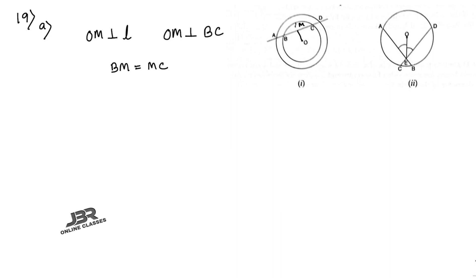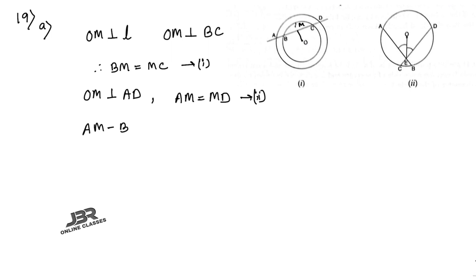Also, OM is perpendicular to AD for the outer circle, so AM equals MD. Subtracting: AM minus BM equals MD minus MC, which gives AB equals CD. Proved — a very simple problem.